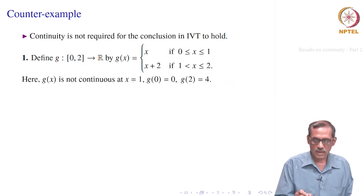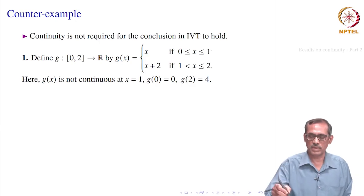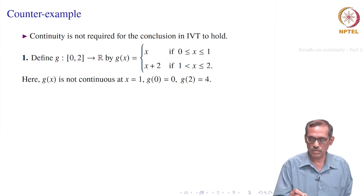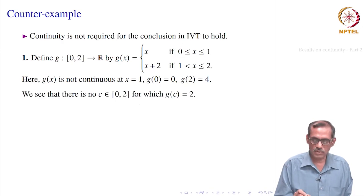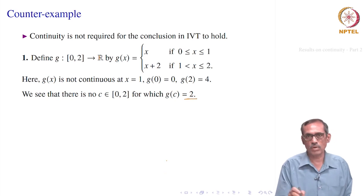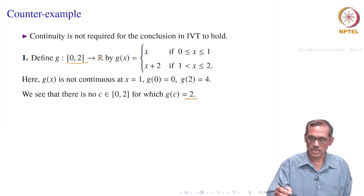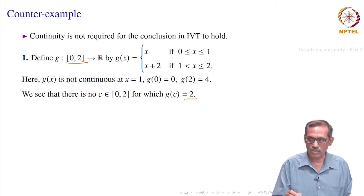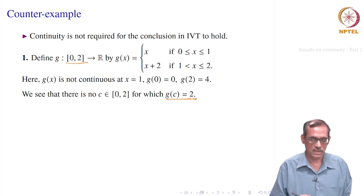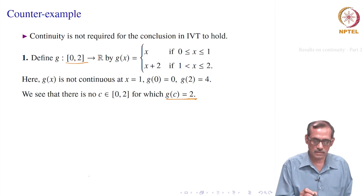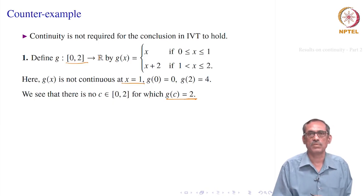We find that it is not continuous at x = 1; that is the breakpoint. g(0) = 0 and g(2) = 4. We see that 2 lies between 0 and 4, but there is no point c in the domain such that g(c) = 2, because g achieves values from 0 to 1 as x varies from 0 to 1, and again from 3 to 4. Nothing is mapped to the interval (1, 3). So g(c) ≠ 2 for any c. It is not continuous at x = 1, and the Intermediate Value Theorem does not hold.